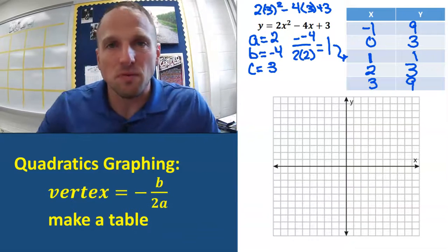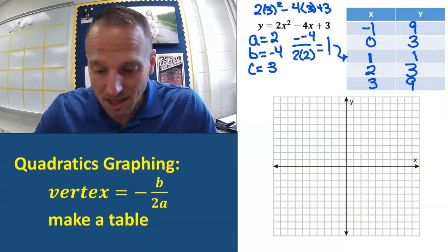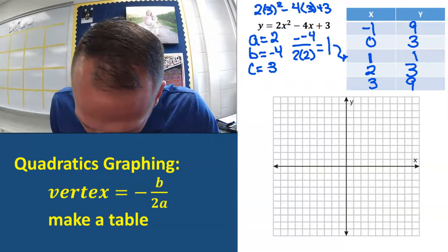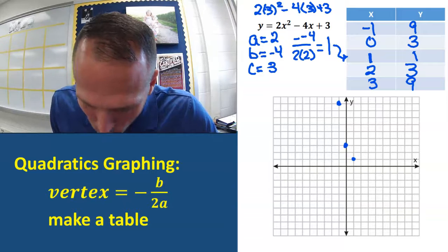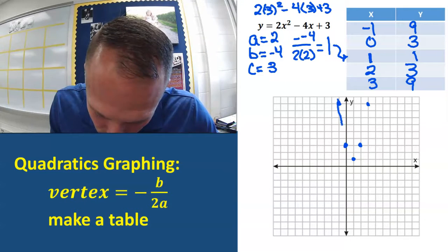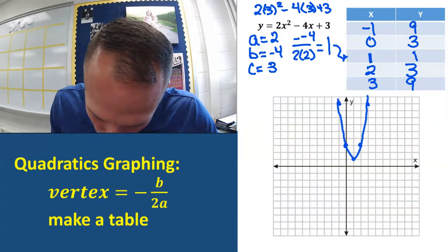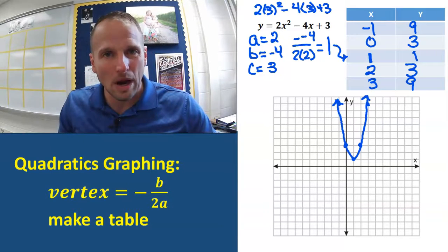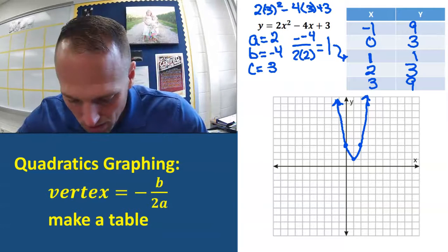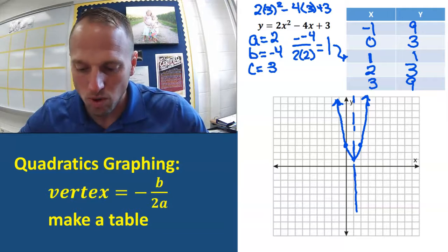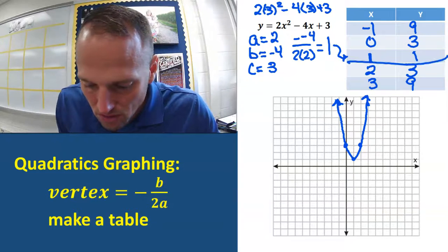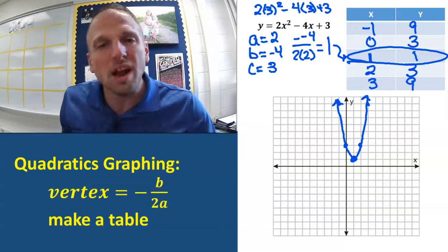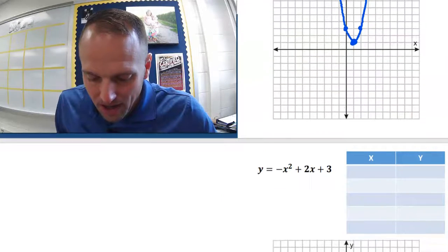Now we've got that table filled out. All we have to do is graph these points and connect the dots. So I've got negative 1 comma 9, 0 comma 3, 1 comma 1, 2 comma 3, and 3 comma 9. Connect these points real nice and neat and we have our parabola. Just like we knew, this is going to be symmetric — there's an axis of symmetry going right down the middle. And that middle point, the vertex we found first at x equals 1, that's right in the smack dab middle of that graph. Let's do another one.